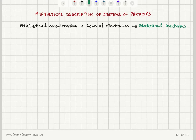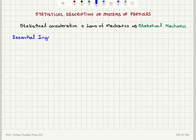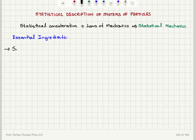There are some essential ingredients in statistical mechanics. Let's list them. The first is the specification of the state of the system.